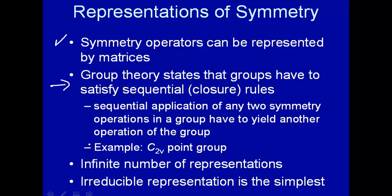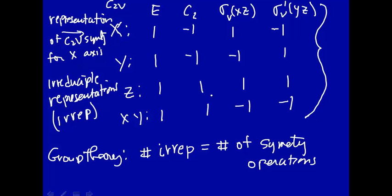This gives us a complete set of irreducible representations in this symmetry. Anything that's symmetric in C2V can be represented as one or more of these irreducible representations. The irreducible representation is the simplest way to represent symmetry. This collection of things is called a character table, and we'll talk more about that in the next lecture. For this lecture, I hope you've gotten some sense of what a representation of symmetry is, using what's called a basis for X, Y, Z, and one more. The number of irreducible representations must equal the number of symmetry operations.